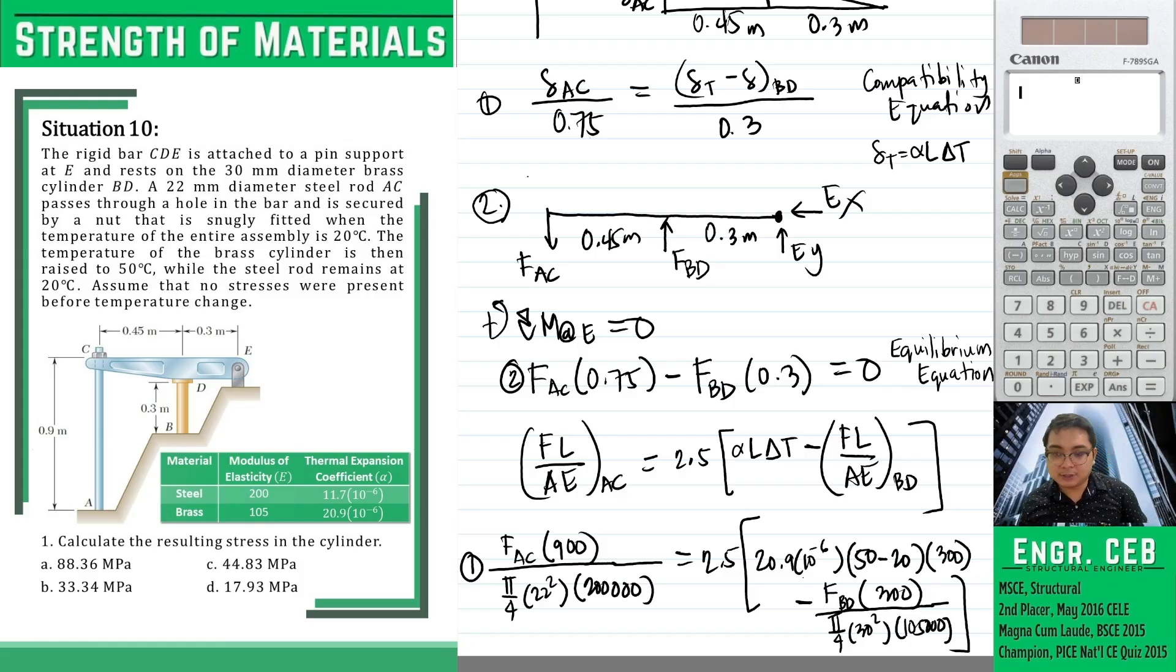Let us now solve for f sub ec and f sub dd. We will use the function in our calculator mode 5, 1, 2 unknown equations. We just input the constants 0.75, negative 0.3, and 0. And then for the first equation, we have 900.